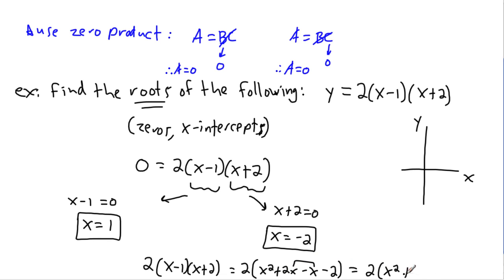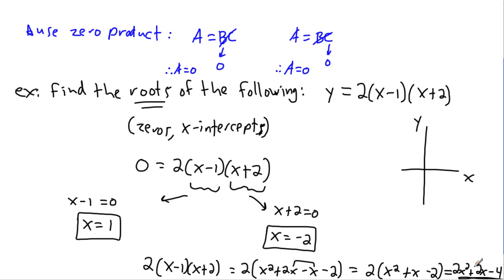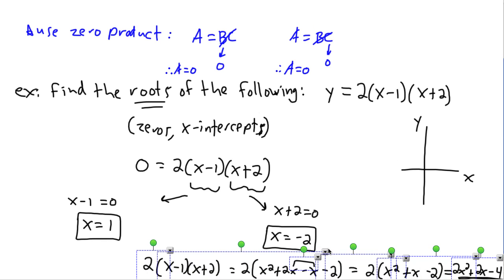Combining those terms inside the bracket: x squared plus (2x minus x) plus minus 2 gives x squared plus x minus 2. Then multiplying through by 2 out front: 2x squared plus 2x minus 4. That's the actual quadratic equation I'm looking at. I'm showing this to prove that even though factored form may not look like a quadratic, expanding it reveals the x squared term, confirming it has a parabolic shape.